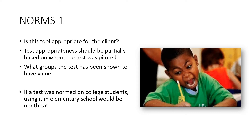We want to make sure that the people being tested are in similar situations as those originally tested, so we can make a real comparison. If not, things will be off — age or ethnicity differences will affect scores. In modern times, many tests are normed appropriately to reflect the diversity of America. We also consider which groups the test has been shown to have value for — which results were most accurate in predicting outcomes.